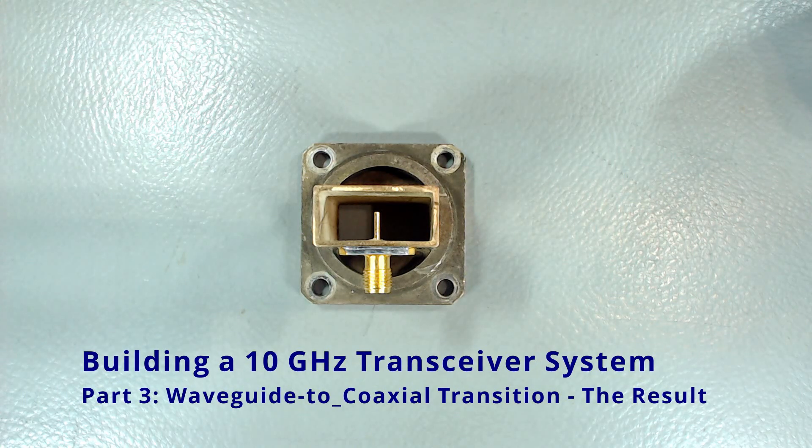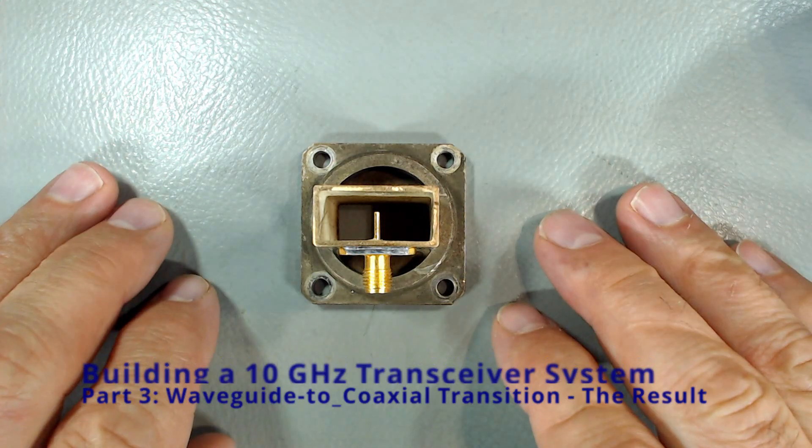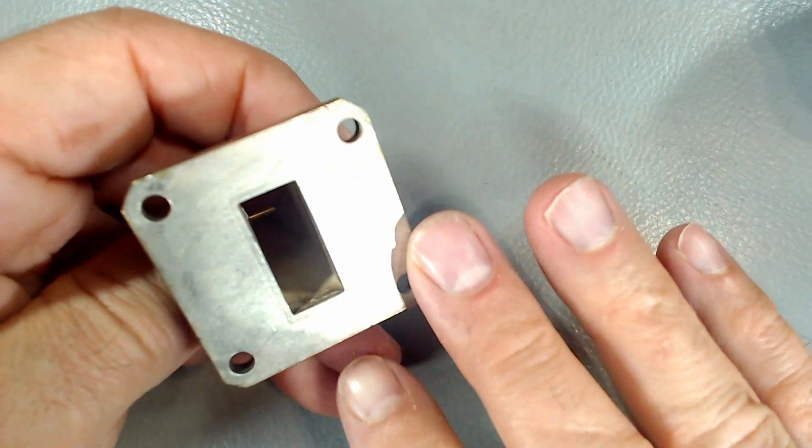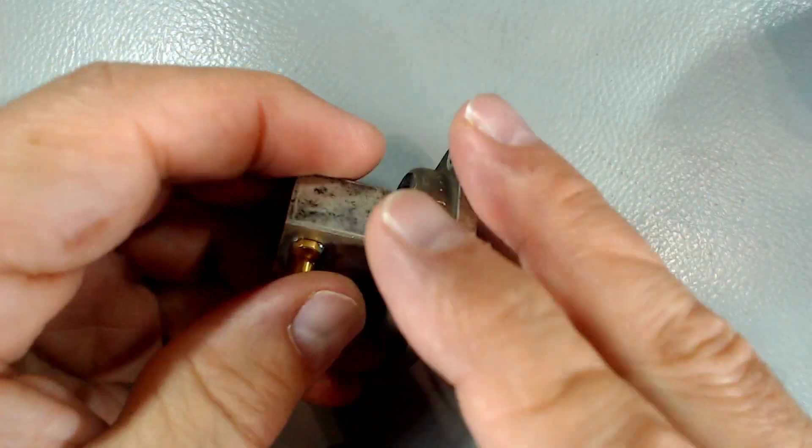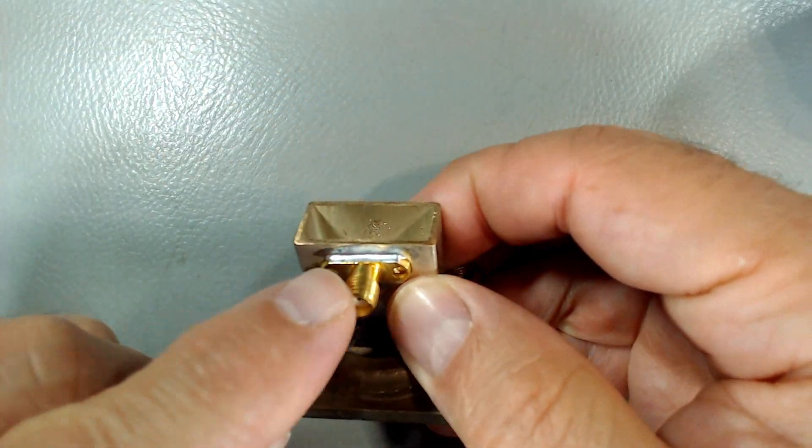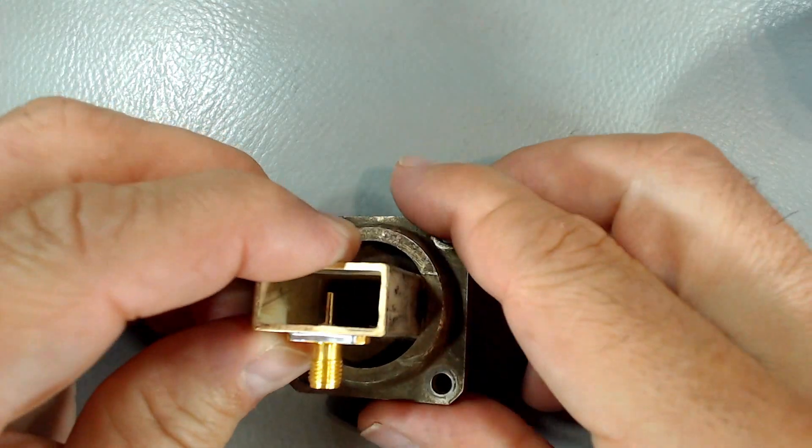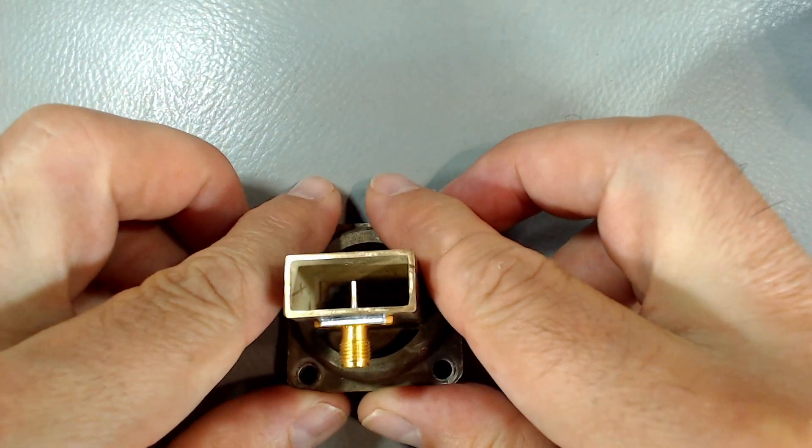Greetings guys. Here's the result of my attempt to make a WR90 waveguide interface to SMA coaxial transition, and the attempt is a success.